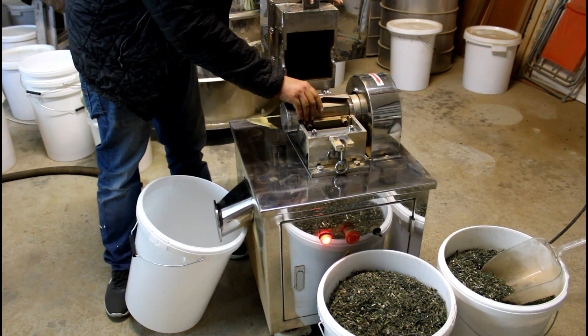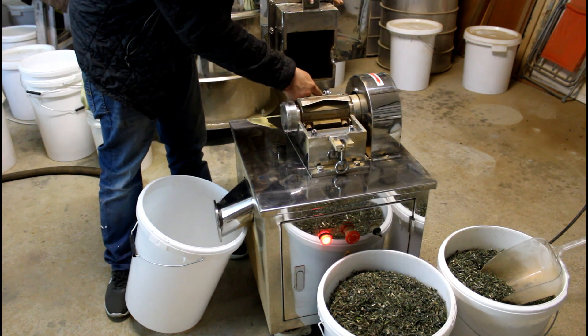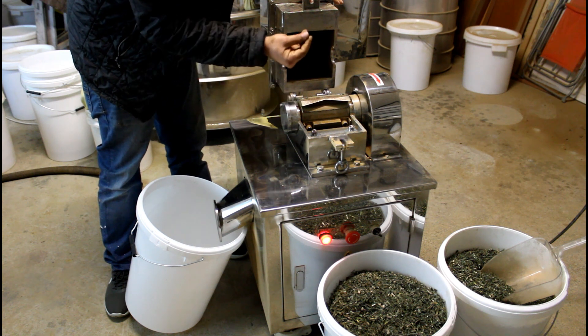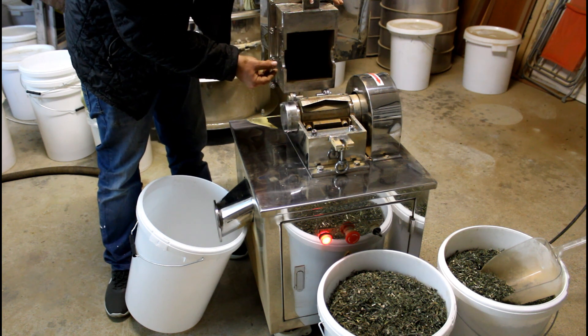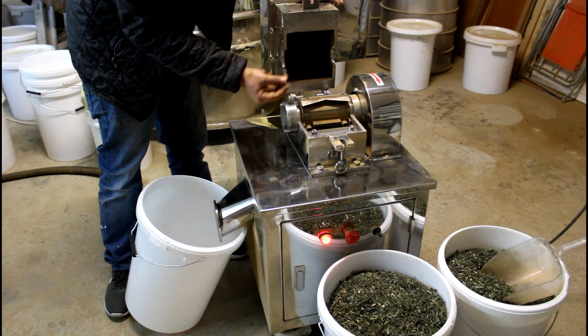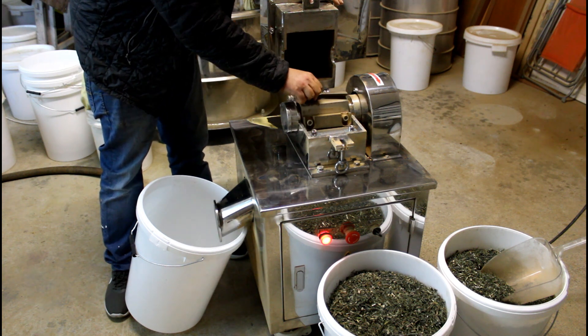And the particle size could be set with the hole size. So the smaller the hole size the finer is the resulting particulate. And the bigger the bigger chunks the machine will produce.